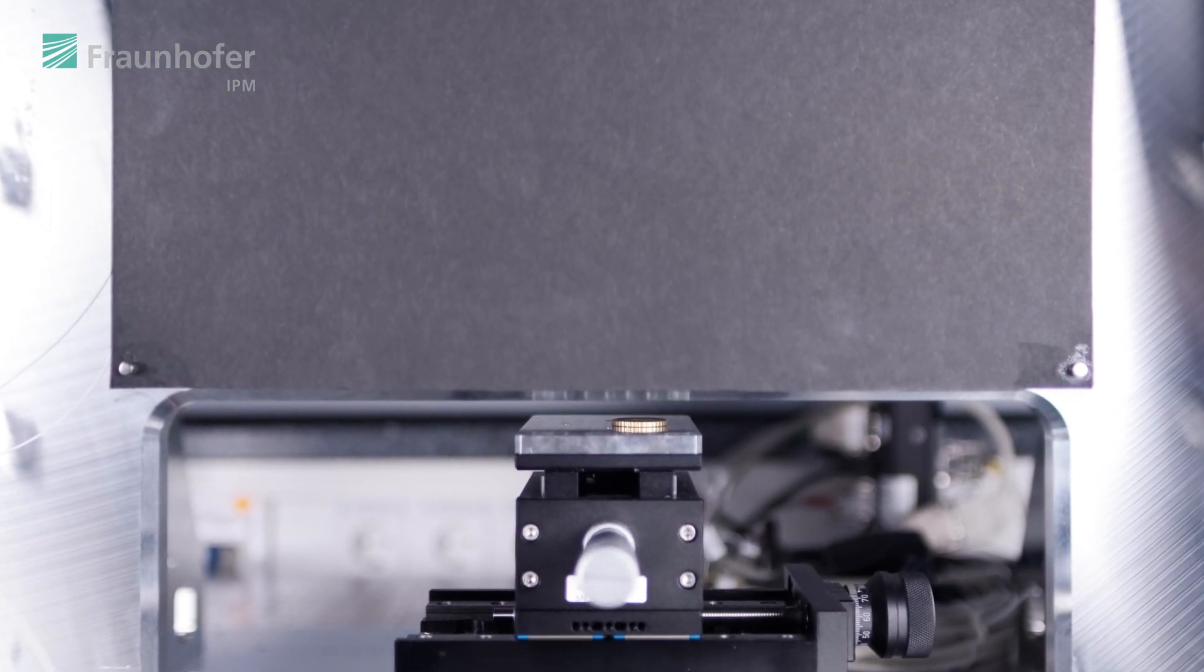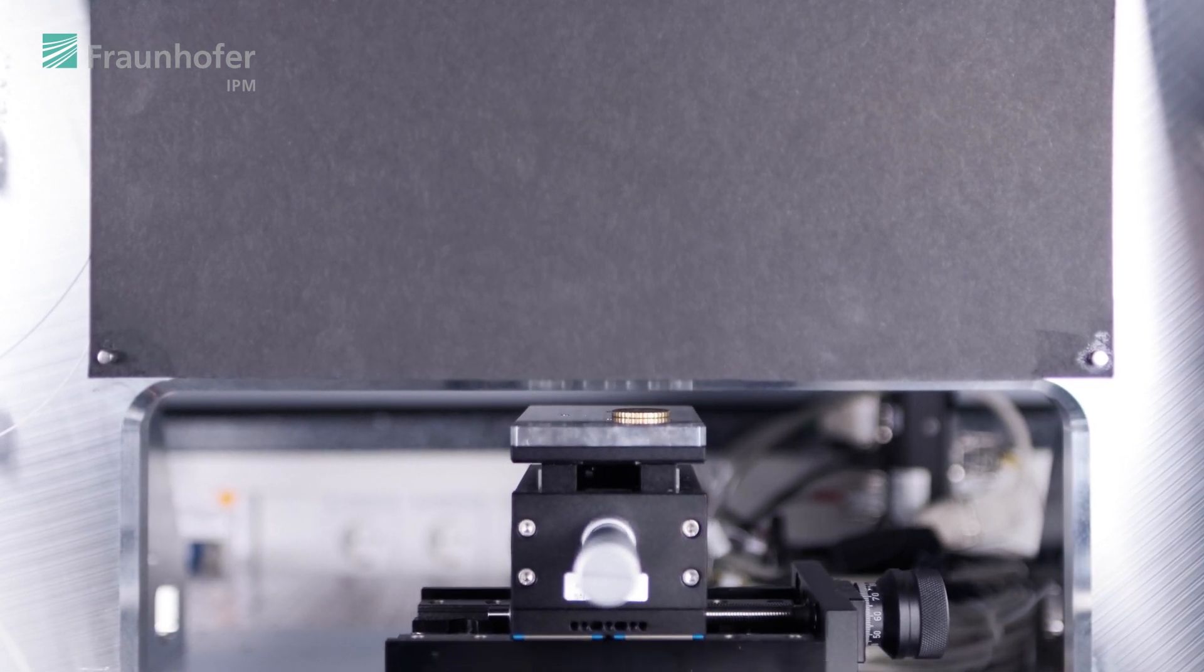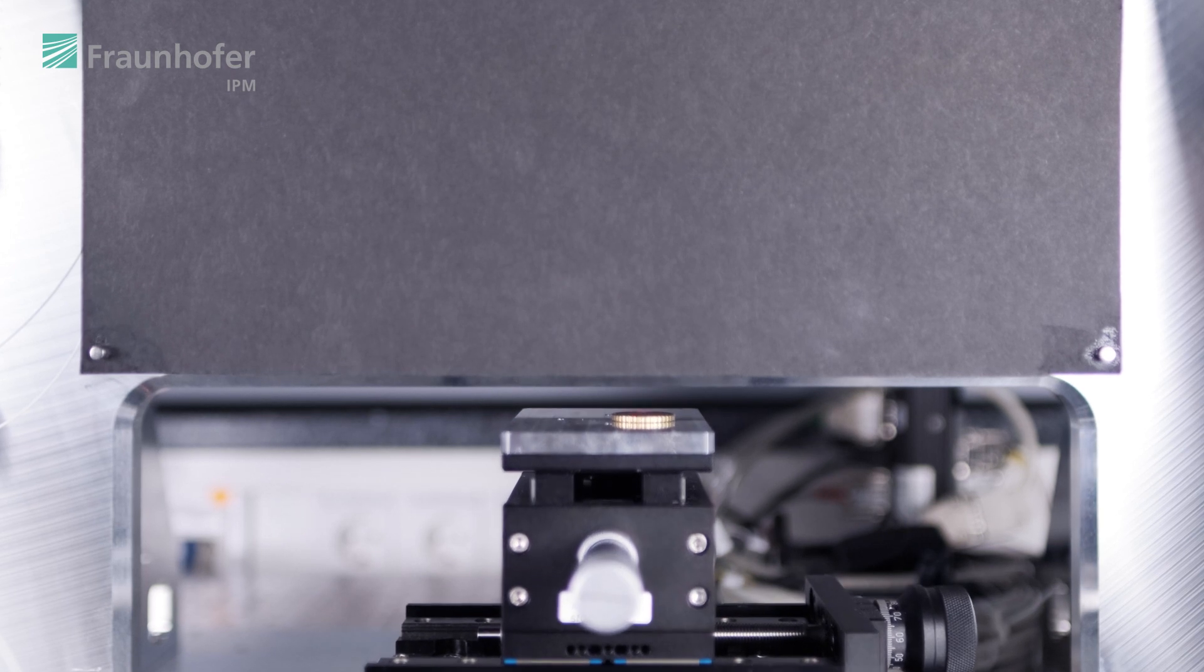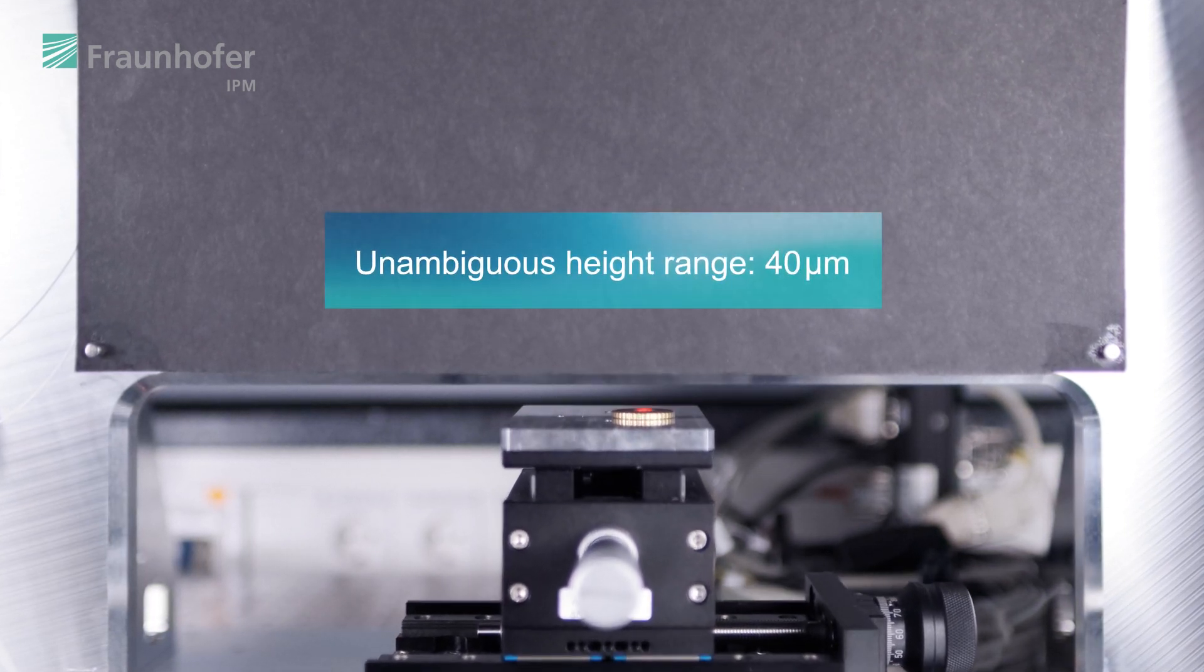We use two lasers. As you can see in the video, they emit red light. They emit slightly different wavelengths so that the difference frequency corresponds to a larger wavelength and we can measure heights unambiguously in a range of about 40 microns.